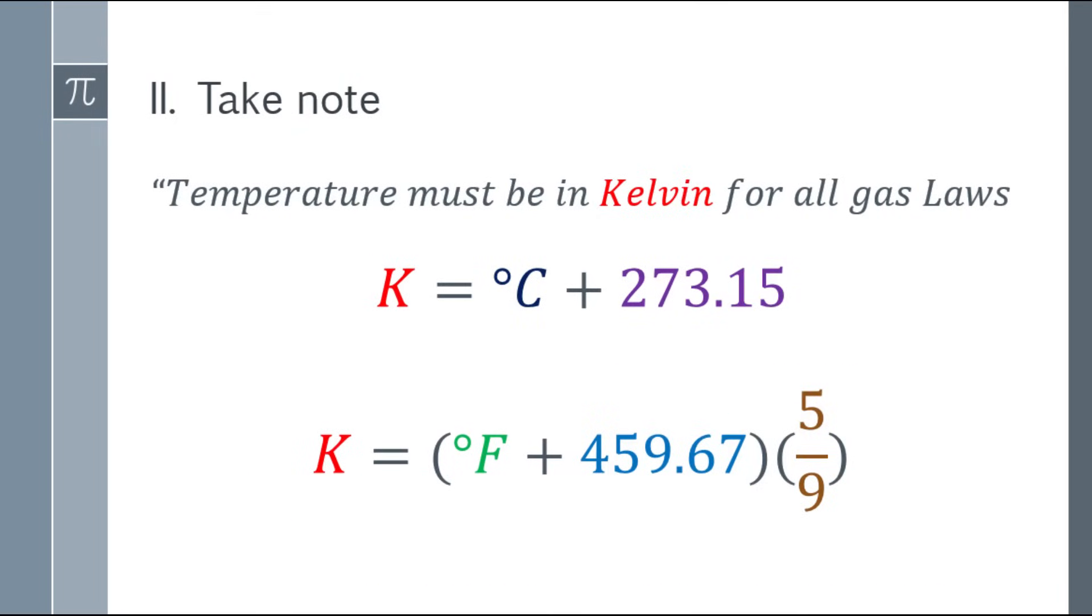Okay, next one. Take note, the temperature must be in Kelvin for all gas laws. So when you solve, always convert it to Kelvin. Whether it's Celsius or Fahrenheit, convert it to Kelvin. If it's in Celsius, just add 273.15. If it's Fahrenheit, add 459.67, then multiply by 5, and divide the answer by 9.